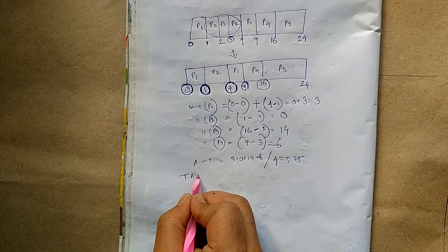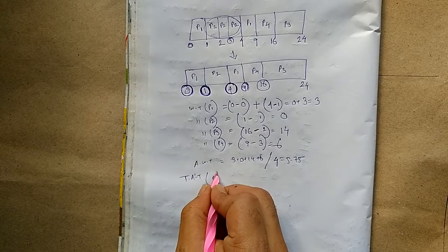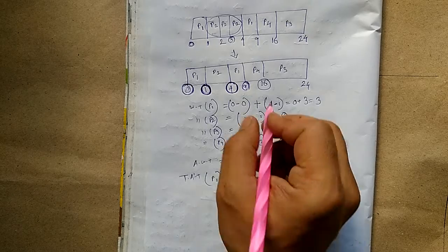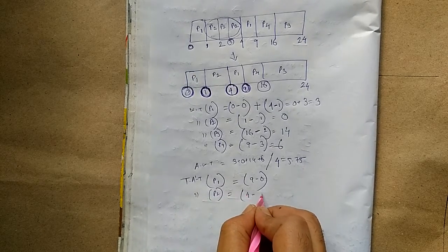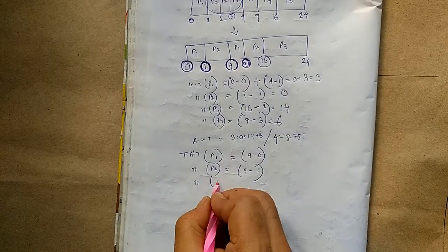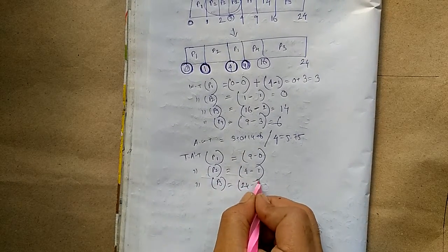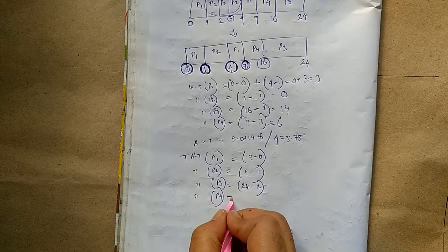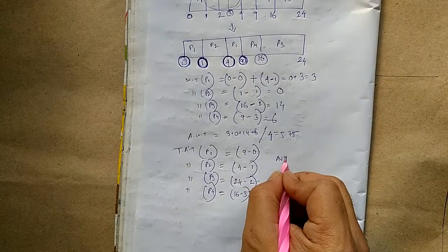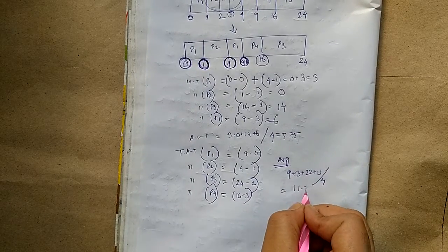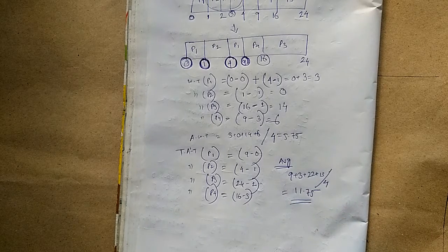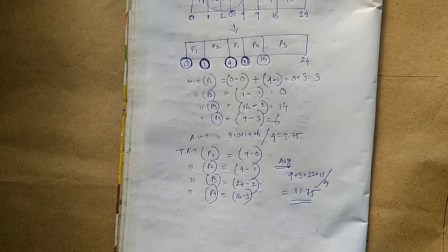Turnaround time for process P1: finishing time 9 minus arrival time 0 equals 9. Turnaround time for process P2: 4 minus 1 equals 3. Turnaround time for process P3: 24 minus 2 equals 22. Turnaround time for process P4: 16 minus 3 equals 13. Average turnaround time equals 9 plus 3 plus 22 plus 13 divided by 4, which equals 11.75. This is the average turnaround time for Preemptive SJF, that is SRTF — Shortest Remaining Time First.